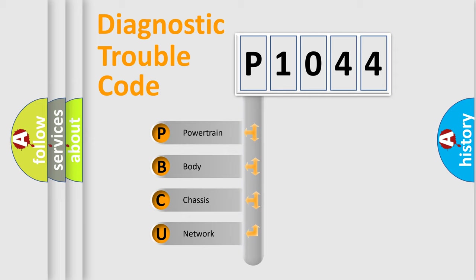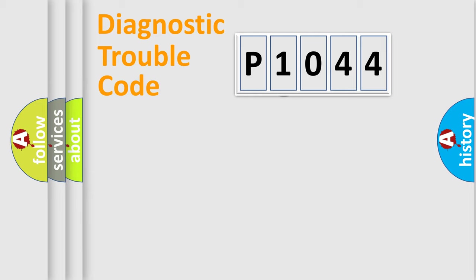We divide the electric system of automobile into four basic units: Powertrain, Body, Chassis, and Network. This distribution is defined in the first character code.